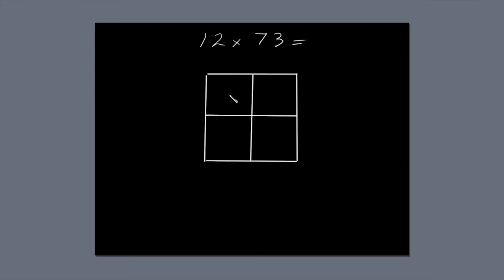You end up with a box divided into four smaller boxes. Now, draw a diagonal through each of the smaller boxes. Write 12 along the top of the box, and 73 down the right-hand side of the box. Next, multiply and fill in the blanks.